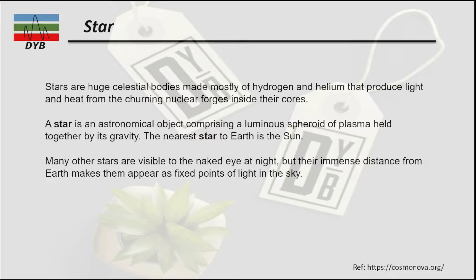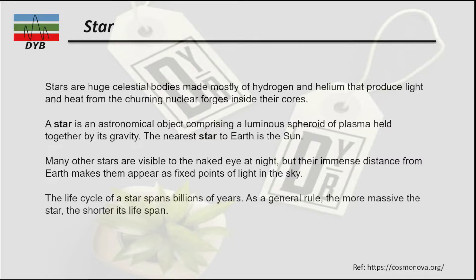Many other stars are also visible with the naked eye at night. When you look at the sky there are millions or billions of stars, but because of their immense distance from Earth, they appear as fixed points of light in the sky. The life cycle of a star spans billions of years. As a general rule, the more massive the star, the shorter its lifespan.